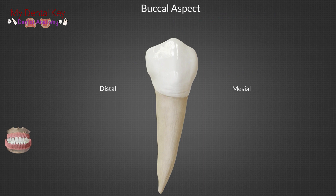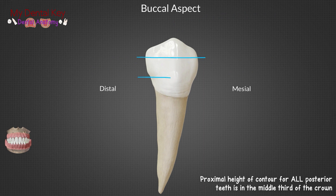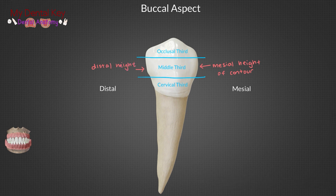The proximal height of contour for all posterior teeth are in the middle third, so the mesial and distal heights of contour for the mandibular first premolar are both in the middle third. However, the mesial height of contour is slightly more occlusal.